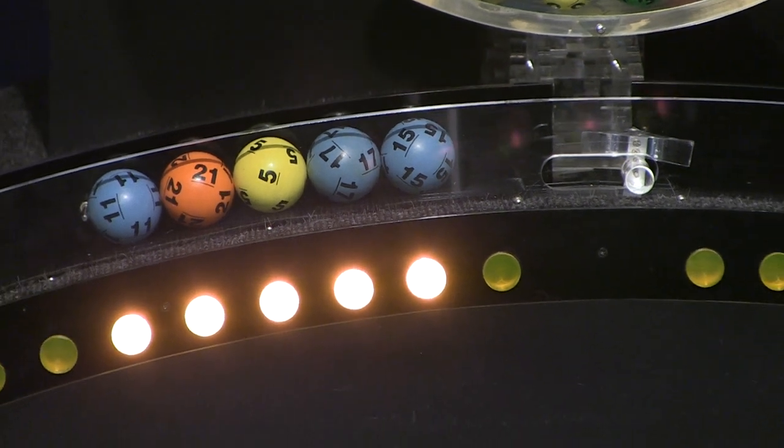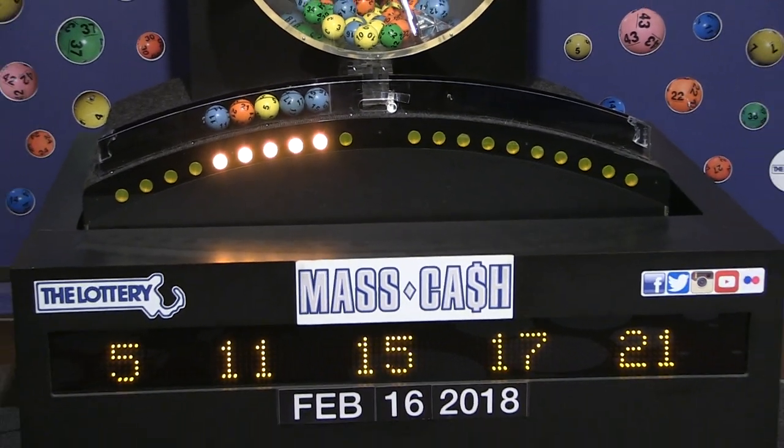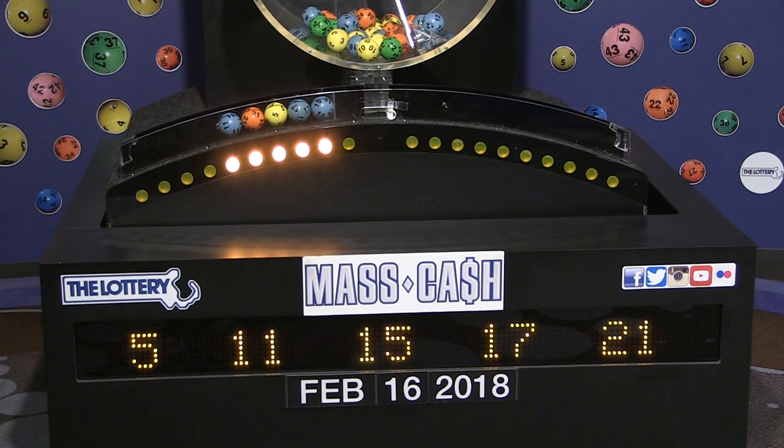Once again, the winning MassCash numbers for Friday, February 16, are 5, 11, 15, 17, and 21. Remember to log on to MassLottery.com to watch all the Mass State Lottery's drawings. Good night.